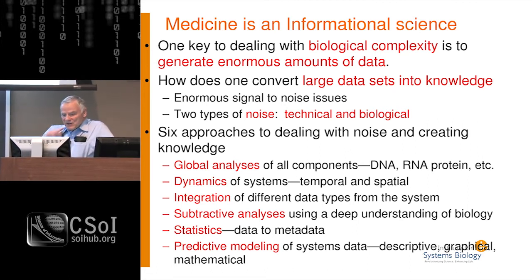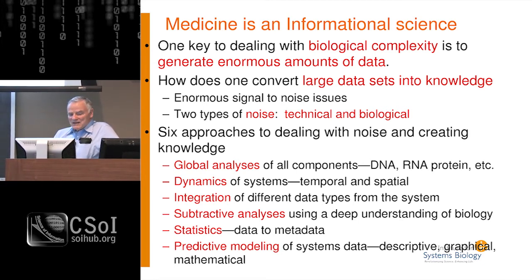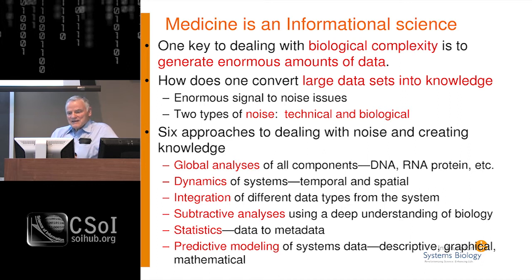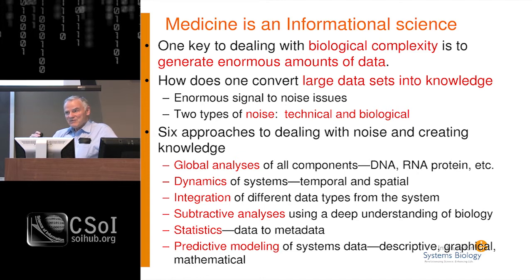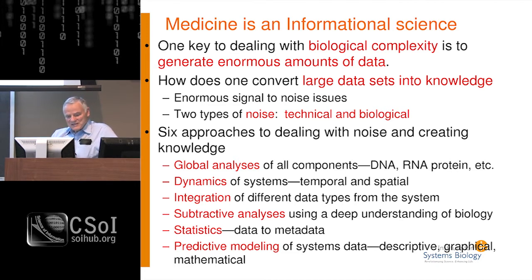In biology we have six approaches to dealing with noise and creating knowledge. One is doing global analyses — studying all the components of a given level of information. A second is studying the dynamics of the system, both spatial and temporal. A third is carrying out integrations across levels. A fourth is subtractive analyses to subtract away unwanted biologies. Statistics are really important in converting data into metadata and reducing the noise dimension. And finally, we want predictive modeling of systems data that can be descriptive, graphical, or mathematical.